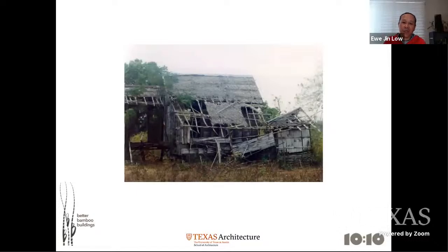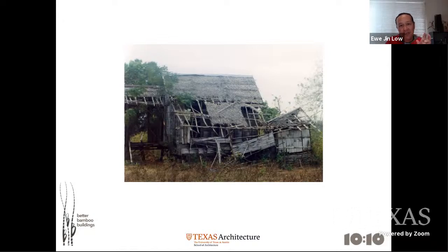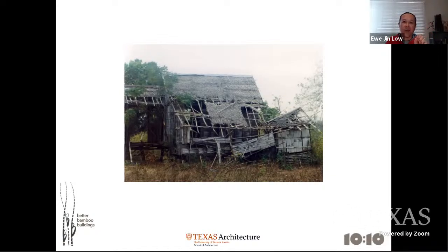Bamboo has been labeled a 'poor man's timber' in many Asian and South American countries because of its past reputation for rotting very easily — within a couple of years. This is what happens to a bamboo building if you don't design it, detail it, harvest, or treat it correctly. That bad reputation is now changing as people get more aware of how to harvest, treat, and design bamboo the right way. If you do it right, it will last a lifetime — 50 years.